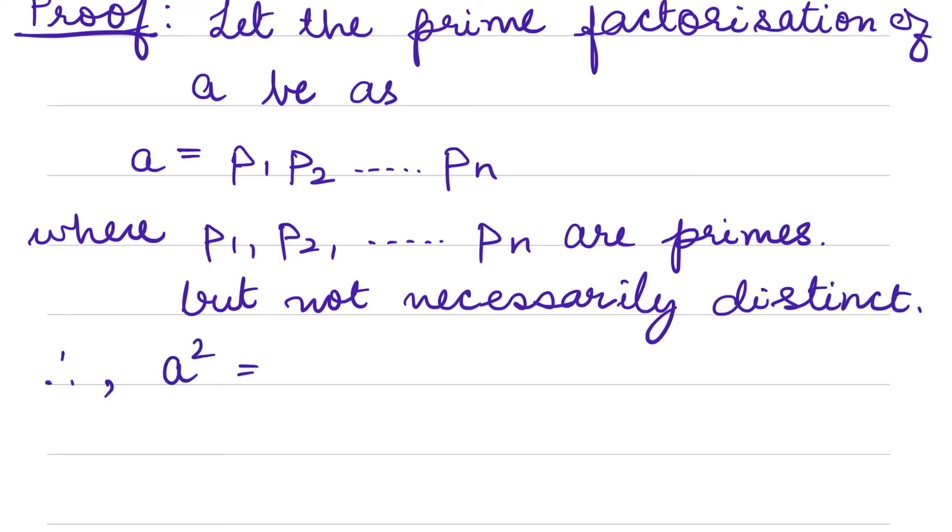a² I can write down as p₁·p₂·...·pₙ into p₁·p₂·...·pₙ, which will be equal to p₁²·p₂²·p₃²·...·pₙ².